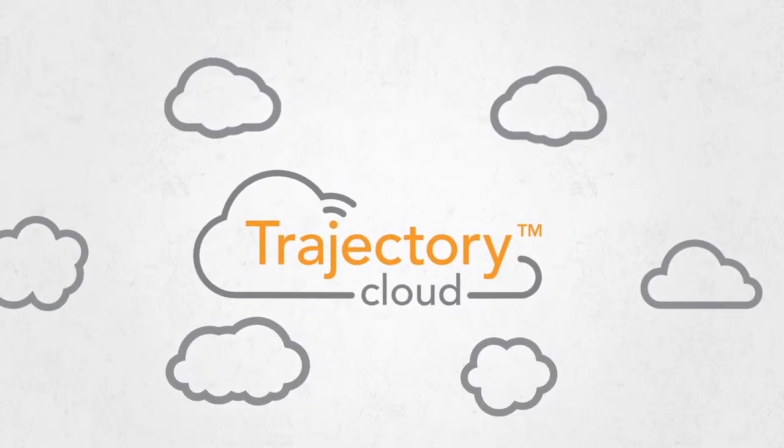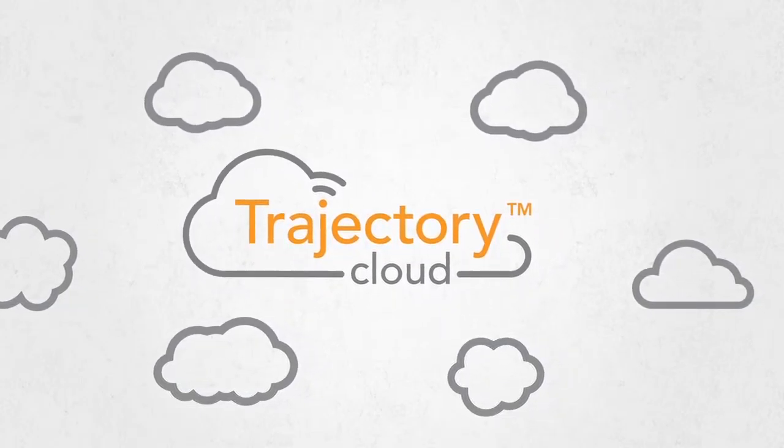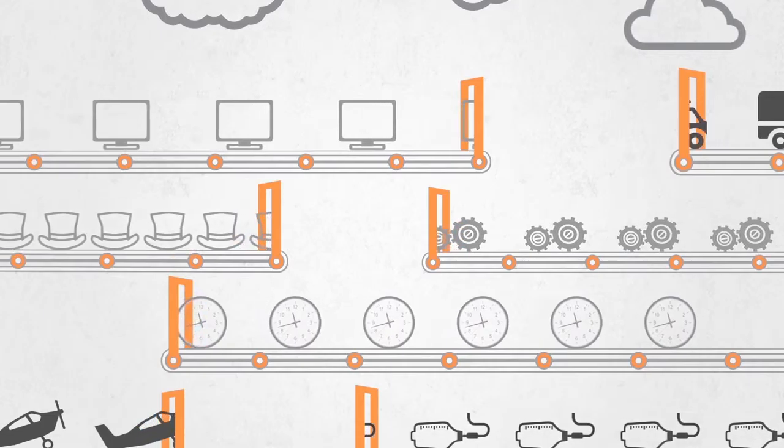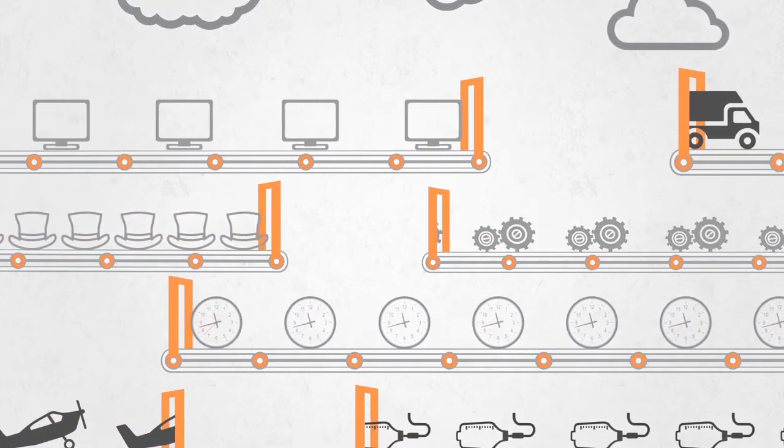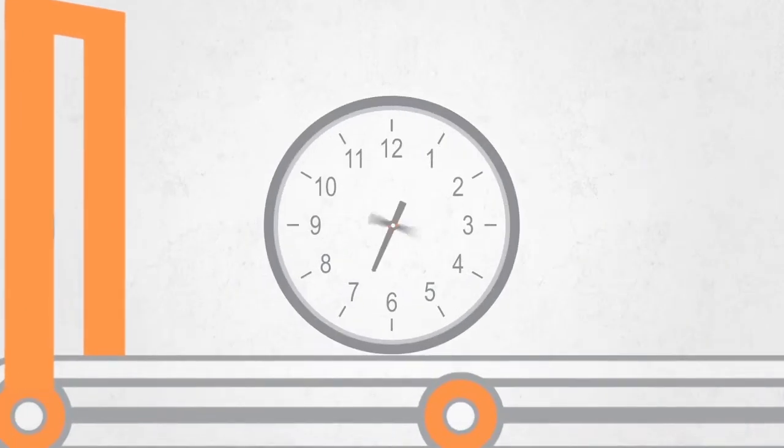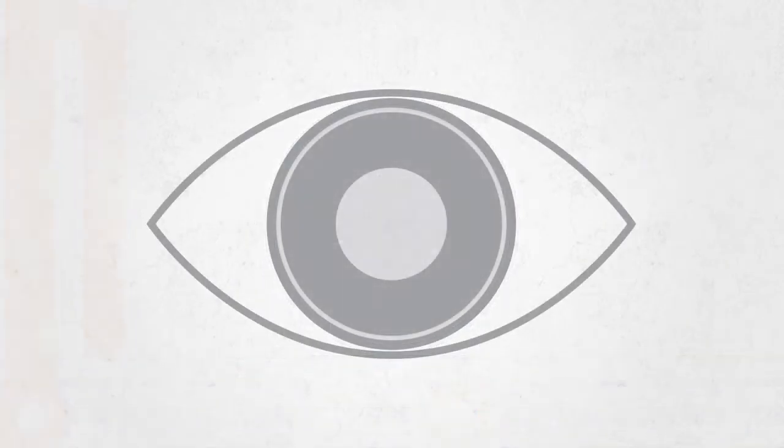Apex's secure cloud-based technology platform, Trajectory, does the real work. Trajectory knows what's in the device, who can access what and when restock is necessary. You have complete 24-7 control and visibility to supply flow, usage and patterns.